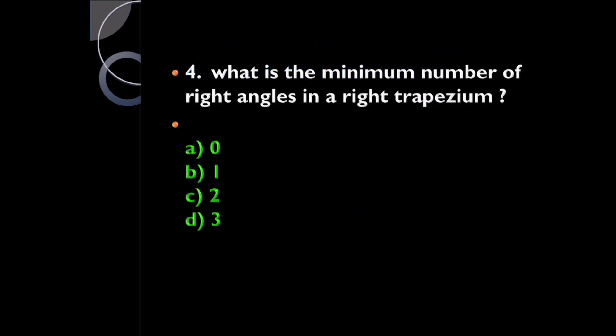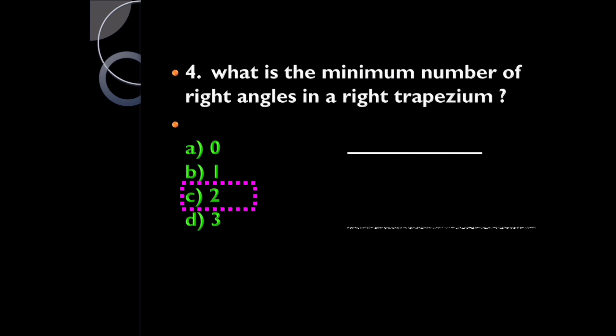Question four: what is the minimum number of right angles in a right trapezium? It is two. According to the definition of a right trapezium, it is a trapezium that has a right angle as an interior angle. But in practice, when two sides are parallel and a perpendicular line acts as the transversal, the co-interior angles are supplementary, so if one is a right angle, the other must also be. Therefore, the minimum number of right angles in a right trapezium is always two.